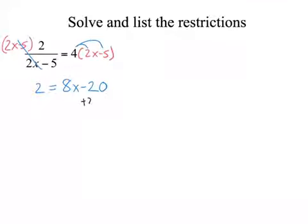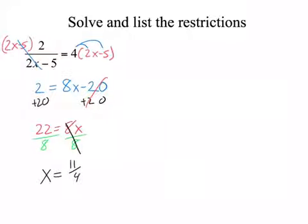So now we add 20 over. Just going to finish solving this problem. 22 equals 8x, divide both sides by 8, and we get x equals 22 divided by 8 reduces, 2 goes into both, so that's 11 fourths.